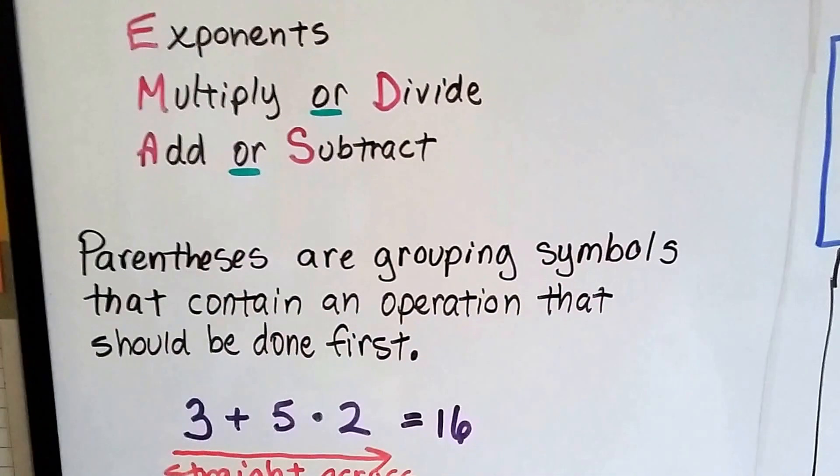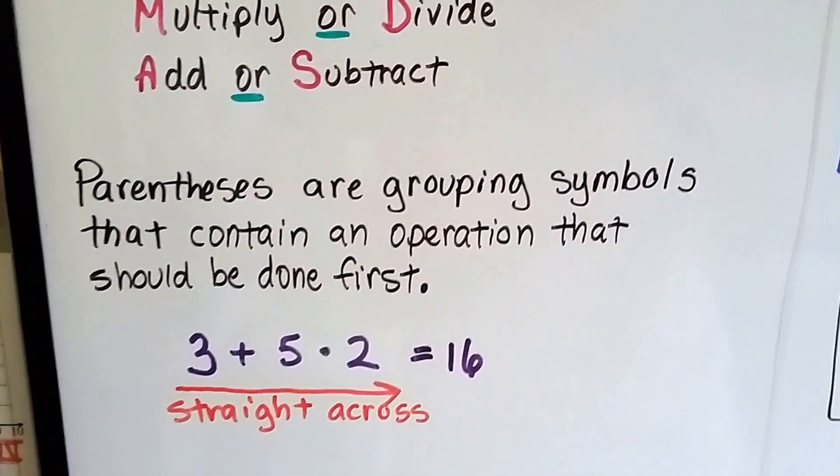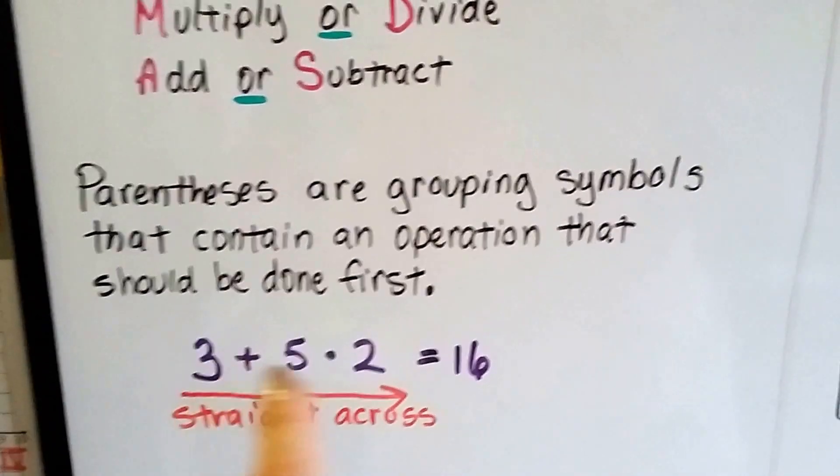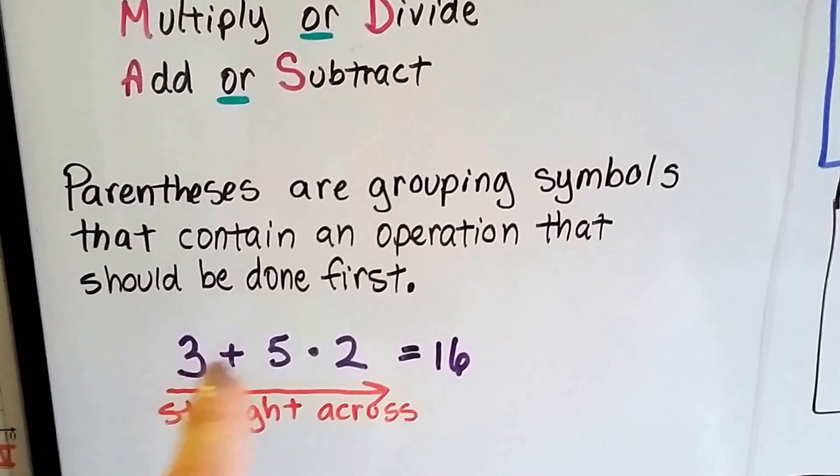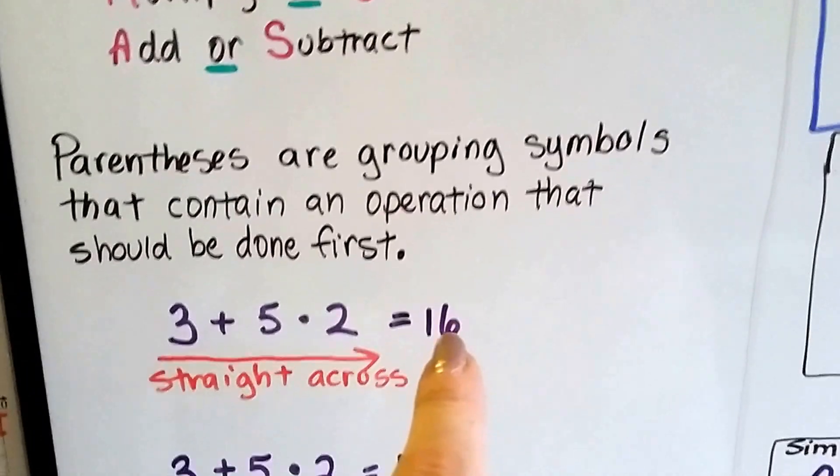Parentheses are grouping symbols that contain an operation that should be done first. If we just saw 3 plus 5 times 2 (the dot means times) and went straight across, we'd have 3 plus 5 is 8 times 2. That's 16.